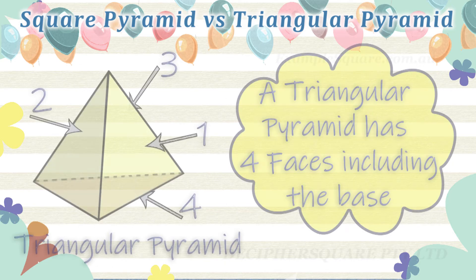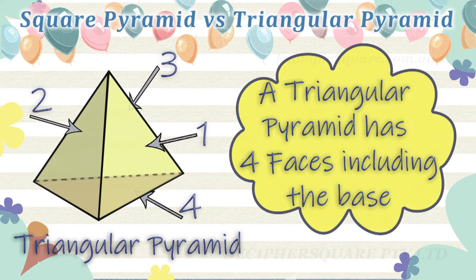A triangular pyramid has four faces. All the faces of a triangular pyramid are triangles, as the base is a triangle and the side faces of pyramids are always triangles.